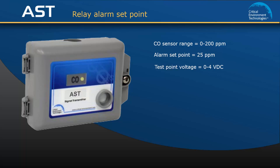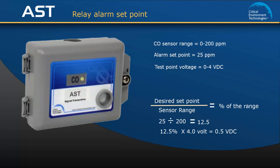We need to find out what voltage equals the alarm set point of 25 ppm. To do this we use the formula shown on the screen. The desired set point value is 25 ppm and the sensor range value is 200 ppm. 25 divided by 200 equals 12.5% of range. Multiply this value by 4 volts, and the test point voltage setting to achieve an alarm set point of 25 ppm is 0.5 volts.